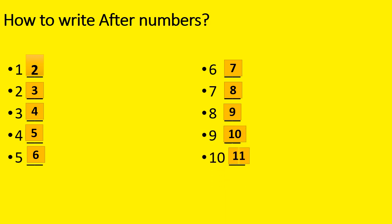What comes after 10? 11. Likewise, you can write up to 100 or up to 1000 — what comes after 11, 12, what comes after 12, 13, and so on. You can see here it's a simple counting from 1 to 10, but it can be random also.